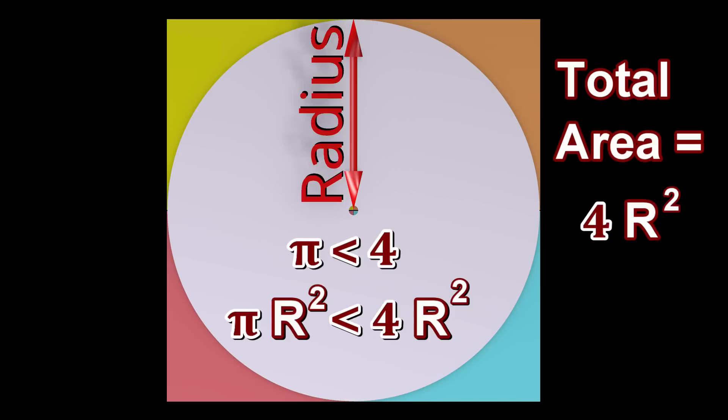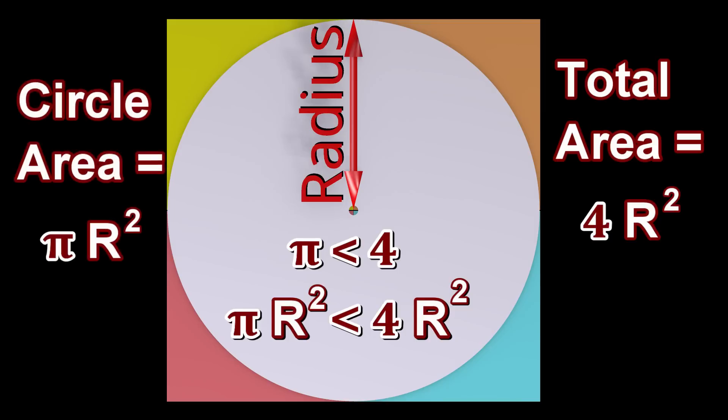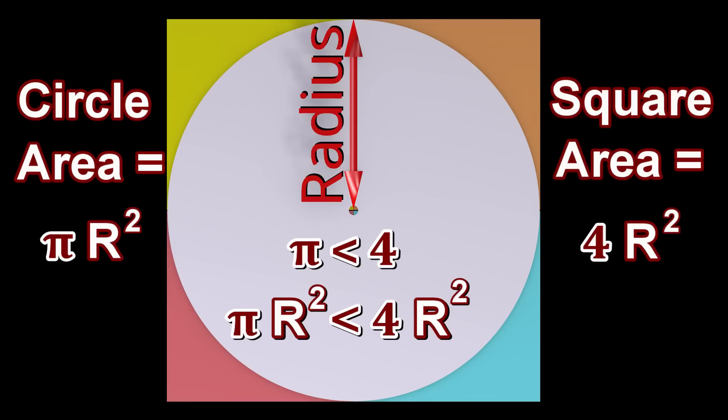Pi multiplied by the radius squared is the area of the circle, and four multiplied by the radius squared is the sum of the areas of the four squares. This is in agreement with our intuitive understanding that the area of the circle needs to be slightly less than the sum of the areas of the four squares.